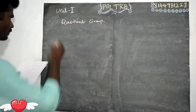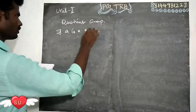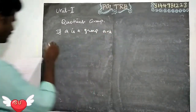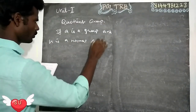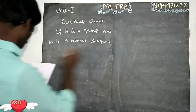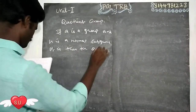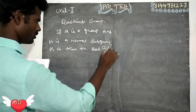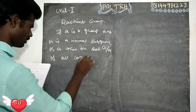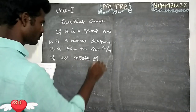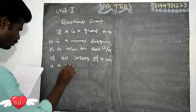If G is a group and H is a normal subgroup of G, then the set of all cosets — already the number of cosets, partitioning G — is a group.